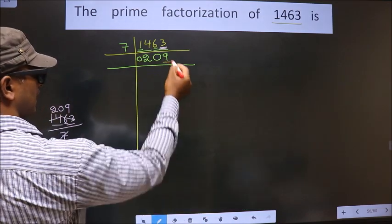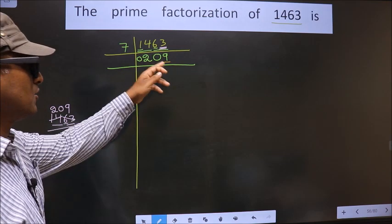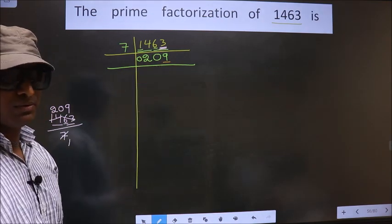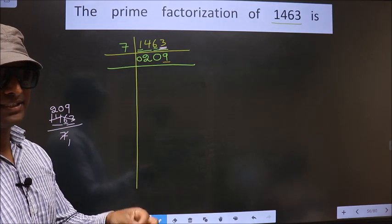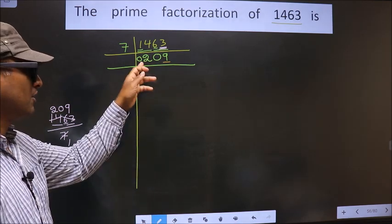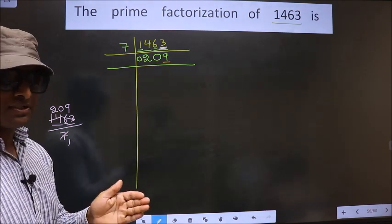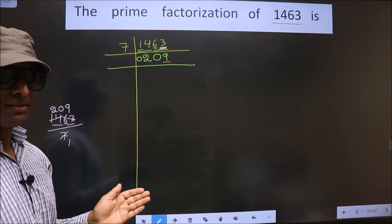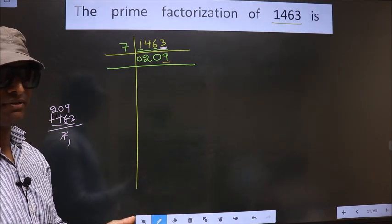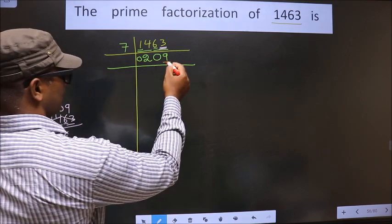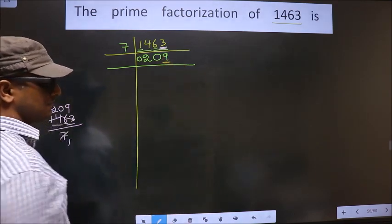Now for this number — 209 — the last digit is 9, which is not even. So, this is not divisible by 2. To check divisibility by 3, we add the digits: 2 plus 0 plus 9. We get 11. 11 is not divisible by 3, so this number is also not divisible by 3. The next prime number is 5; the last digit is neither 0 nor 5, so this is not divisible by 5.